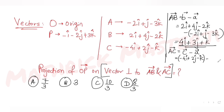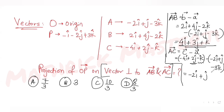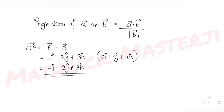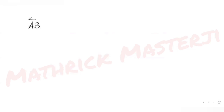Now finding AC: AC equals C minus A. C is minus 4i plus 2j minus k, minus A which is minus 2i plus j minus 3k. This gives minus 4i plus 2i equals minus 2i, 2j minus j equals j, and minus k minus of minus 3k equals plus 2k. So AC is minus 2i plus j plus 2k. Now I need a vector perpendicular to both, which means finding the cross product of AB and AC.